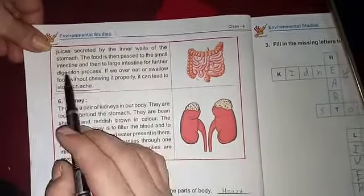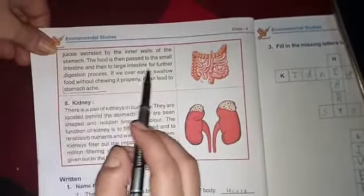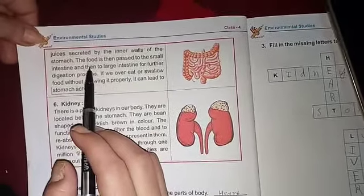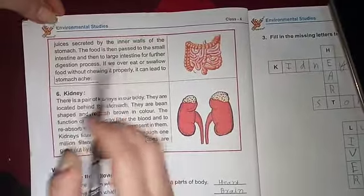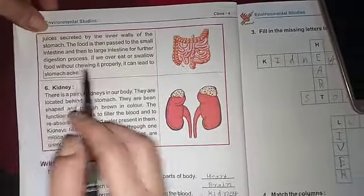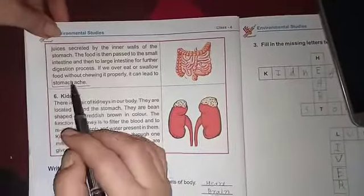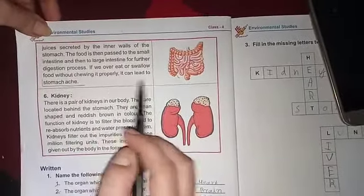The food is then passed to the small intestine and then to the large intestine for further digestion. If we overeat or swallow food without chewing it properly, it can lead to stomach problems.